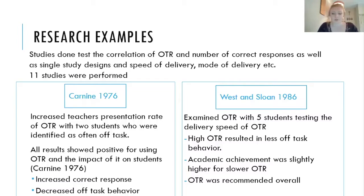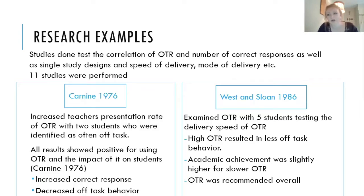The second study I highlighted was Weston Sloan, 1986, which examined five students to test OTR delivery speed. High OTR rates resulted in less off-task behavior because students were more focused on answering questions. However, academic achievement was slightly higher when OTR was implemented at a slower rate, giving students more time to formulate their responses. Both findings supported OTR as a very good classroom practice.